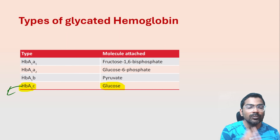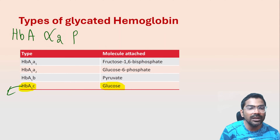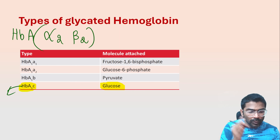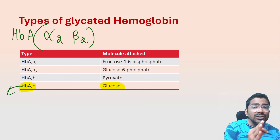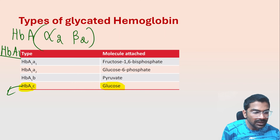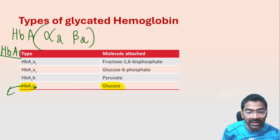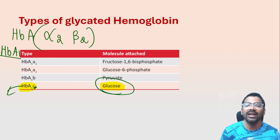This naming is based on chromatographic popularity. Adult hemoglobin HbA is made up of alpha-2 and beta-2 chains. When you do chromatography of HbA, you get a fast-moving fraction called HbA1, and HbA1c is a specific fraction of that. In HbA1c, it is glucose which is non-enzymatically attached.